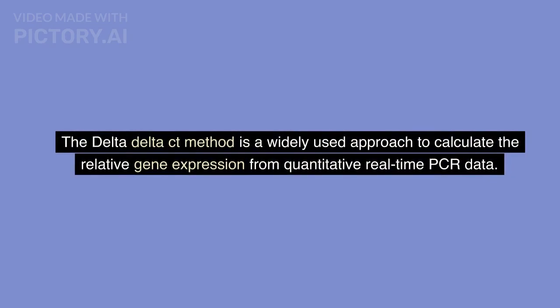The ΔΔCT method is a widely used approach to calculate the relative gene expression from quantitative real-time PCR data. Here are the general steps to follow.